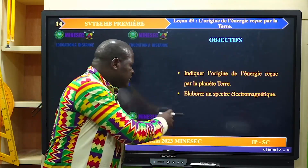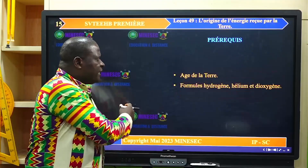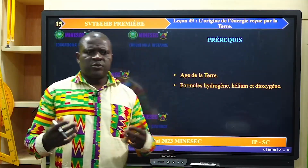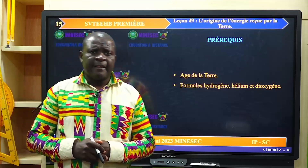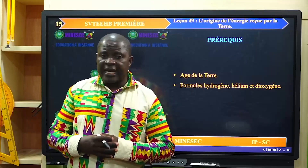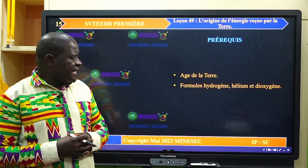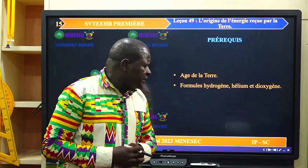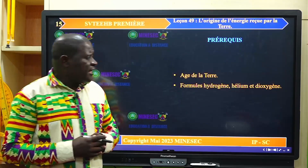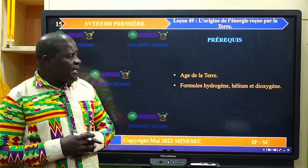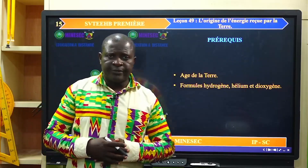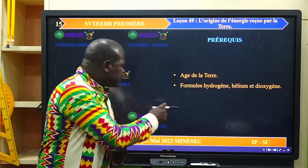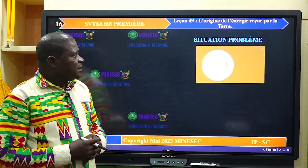Pour ce faire, nous devons nous rappeler des notions sur l'âge de la Terre. Nous savons que notre planète Terre a un âge sensiblement égal à 4,5 milliards d'années. Et les formules à retenir sont : l'hydrogène H, l'hélium He et le dioxygène O2, puisque ces éléments vont intervenir dans notre séance.